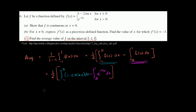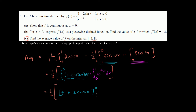This is going to be equal to 1 half, open brackets. Now let's take the antiderivative of 1 minus 2 sine of x. The antiderivative of 1 with respect to x is just x. For negative 2 sine of x, the derivative of cosine of x is negative sine of x, so this is just going to be 2 cosine of x. We evaluate that at 0 and at negative 1.